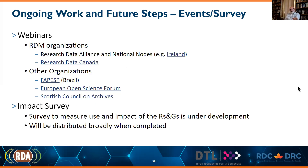Other organizations including RDA itself have had a number of presentations, from regional nodes like RDA Ireland as well as from organizations affiliated or not with RDA, such as FAPESP from Brazil, the European Open Science Forum, and the Scottish Council on Archives. One other thing in progress is an impact survey, intended to be distributed broadly to all those various stakeholder communities to try to get a sense of the impacts of the guidelines and recommendations in the short term, and also what else the RDA community can do to improve either those specific guidelines or similar ones for the future.